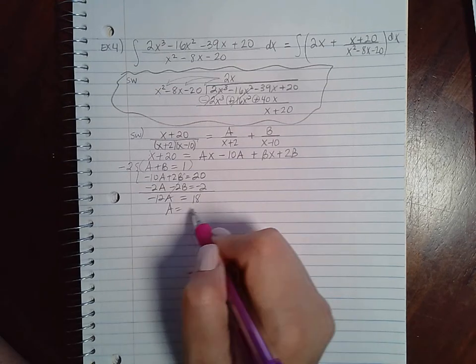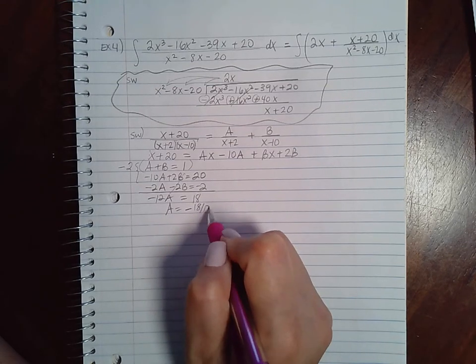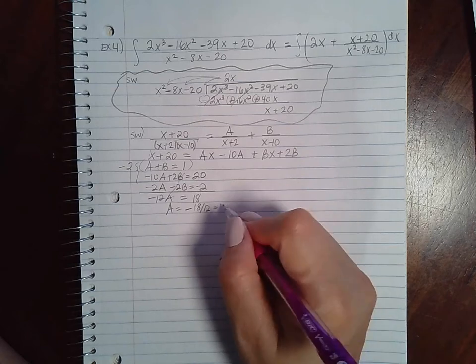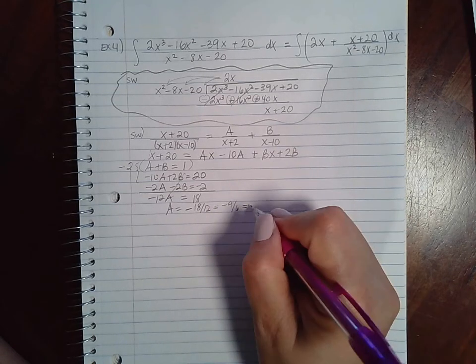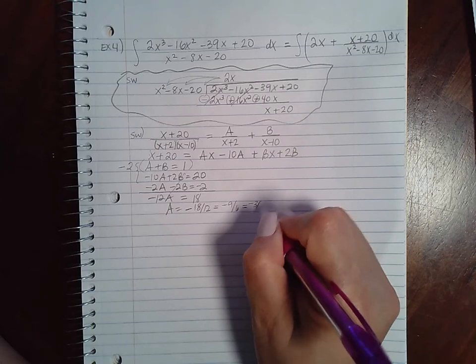So a equals negative 18 over 12. If I reduce by 2, negative 9 over 6. If I reduce by 3, negative 3 over 2.